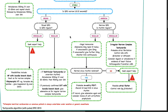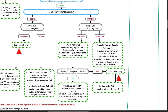If QRS complexes are narrow and regular, give vagal maneuvers, then adenosine 6 mg rapid IV bolus. If unsuccessful, give 12 mg; if still unsuccessful, give a further 12 mg. Monitor ECG continuously. If normal sinus rhythm is restored, it is probably re-entry paroxysmal SVT — record 12-lead ECG in sinus rhythm; if recurs, give adenosine again and consider anti-arrhythmic prophylaxis. If not restored, seek expert help — possibly atrial flutter; control rate with beta blocker. If QRS complexes are narrow and irregular, it is probably atrial fibrillation; control rate with beta blocker or diltiazem. Consider digoxin or amiodarone if evidence of heart failure. Anticoagulate if AF duration is more than 48 hours.